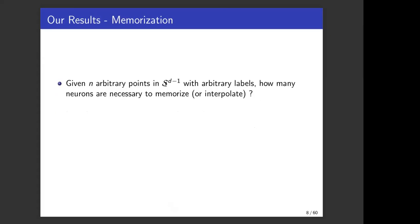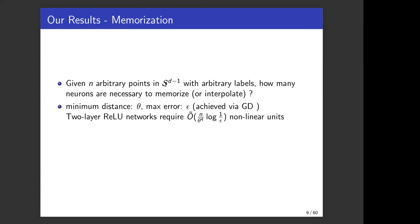We set up the problem as follows. Given an arbitrary point in the d-dimensional sphere, how many neurons are necessary to memorize it? We assume that the minimum distance between the points is theta and the maximum error we can tolerate is epsilon. We show via our techniques that two-layer relu networks require n over theta to the 4 and log 1 over epsilon nonlinear units. This is optimal in n for two-layer relu networks and one of the first works to achieve this via gradient descent. Without over-parametrization, we need n over d nonlinear units.